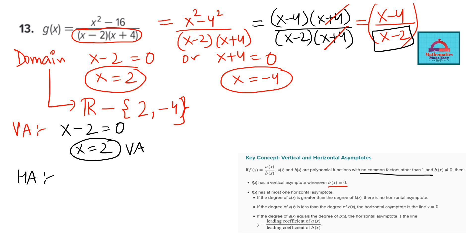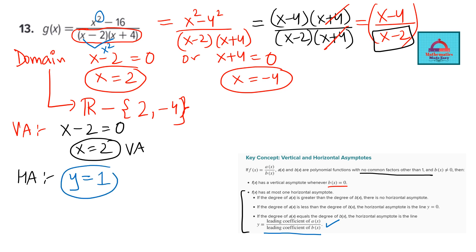For the horizontal asymptote of question 13, comparing the degree of numerator and denominator: the numerator has degree 2 and the denominator (x multiplied by x) also has degree 2 — both equal. Applying the formula, the leading coefficient is 1 in the numerator and 1 in the denominator, so y = 1 is the horizontal asymptote.